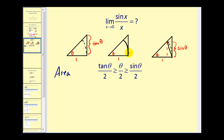We're going to compare the area of this large triangle to this sector and to this smaller triangle, where angle theta is on the unit circle. Therefore this length is equal to one, and this length would also equal one. This segment here would be the tangent segment for this angle.